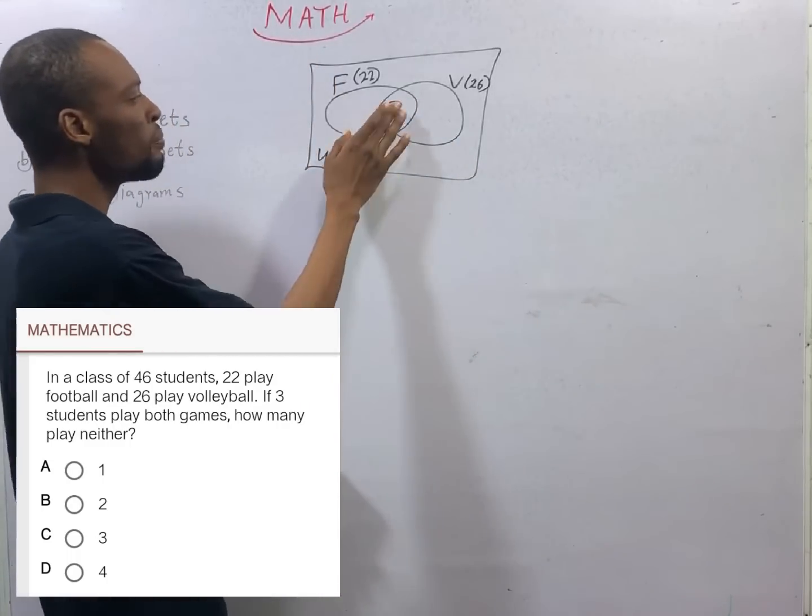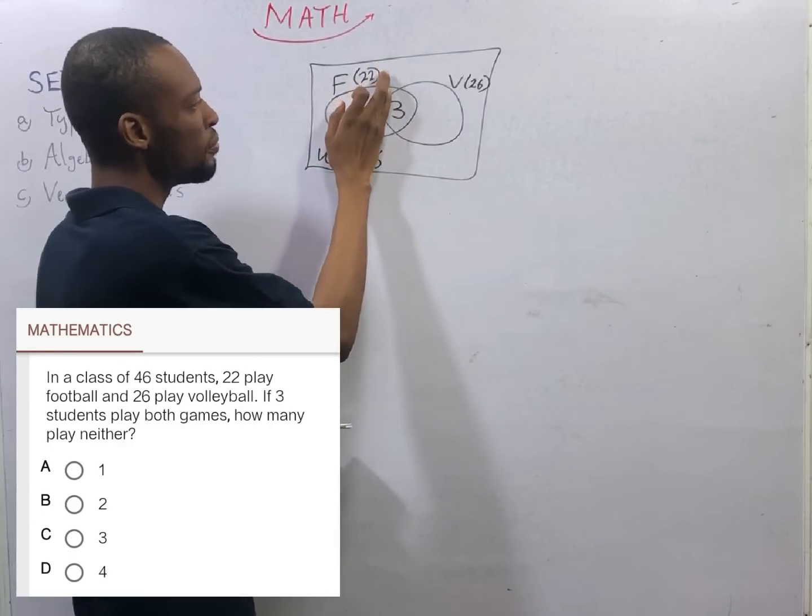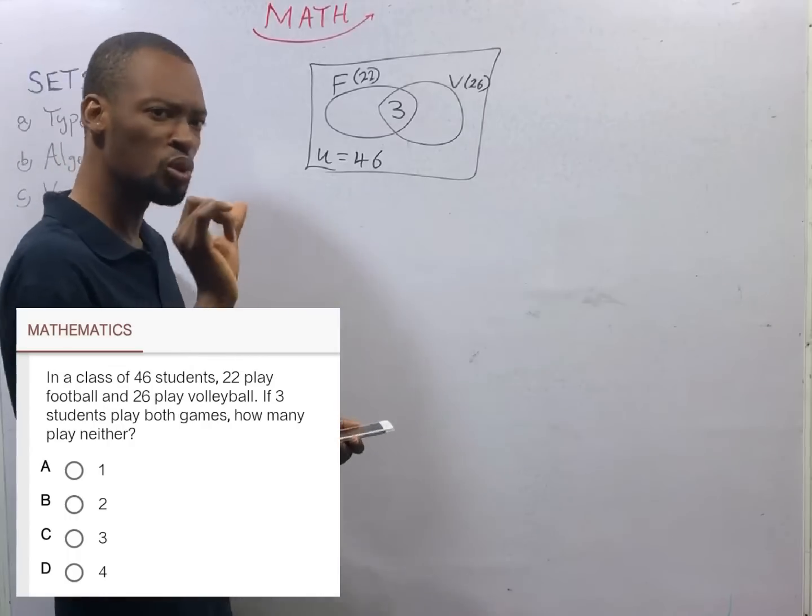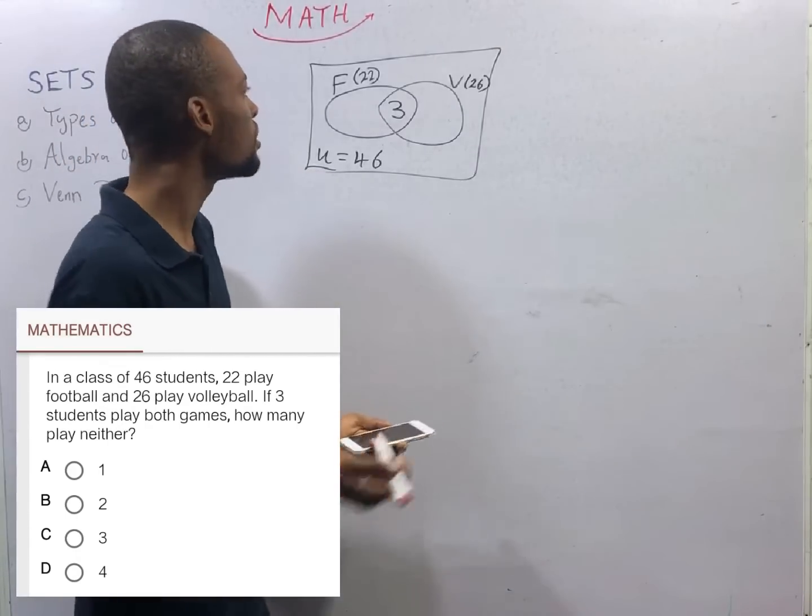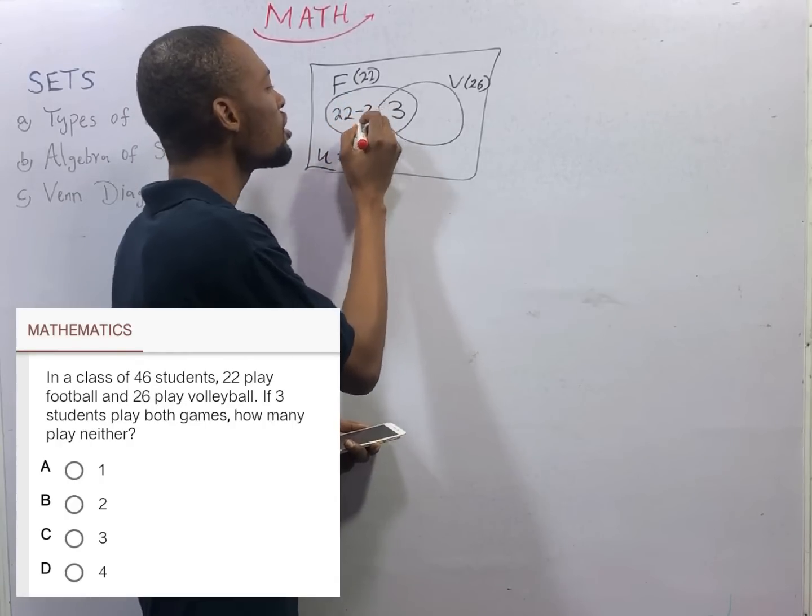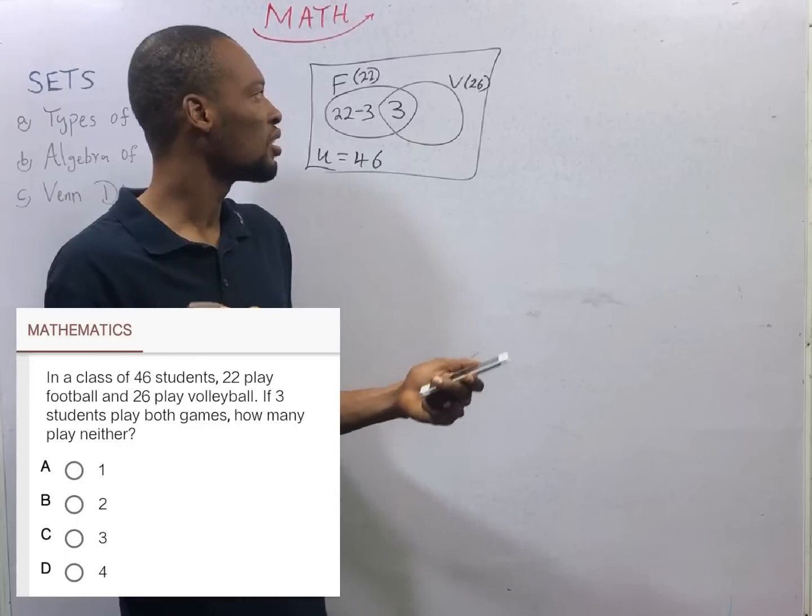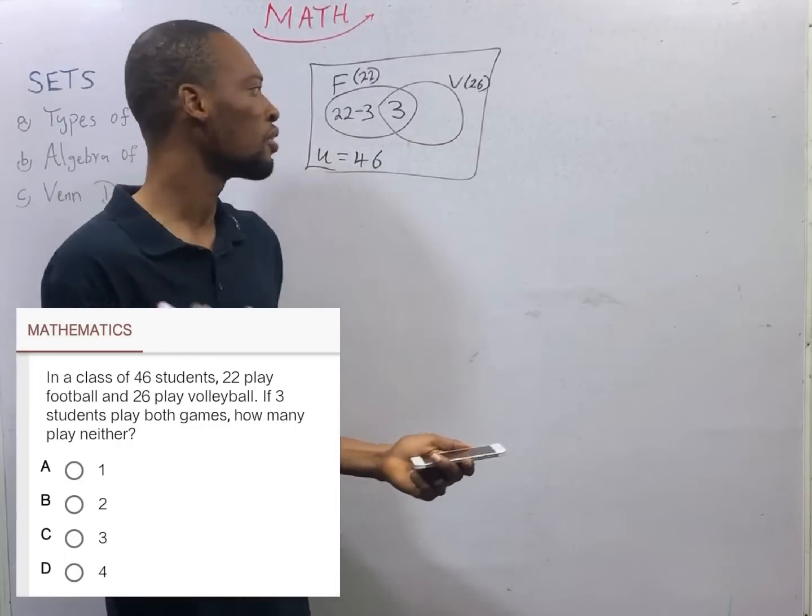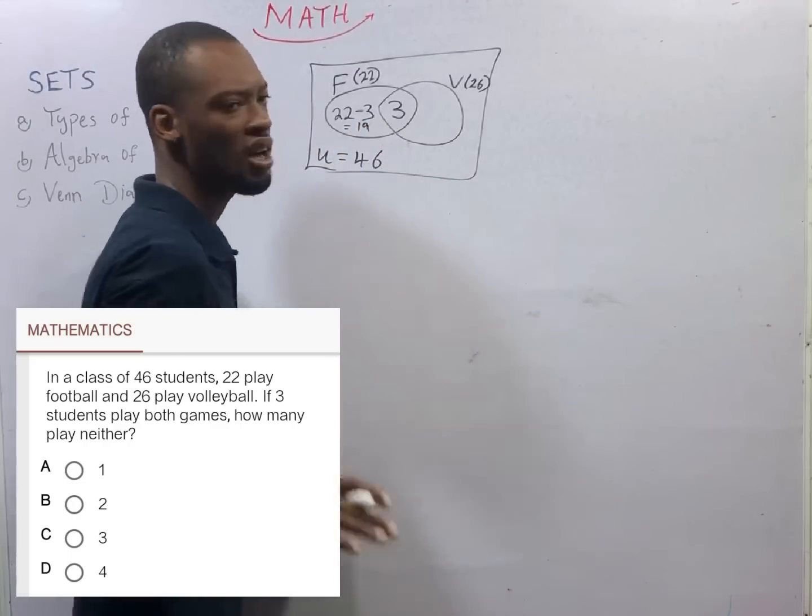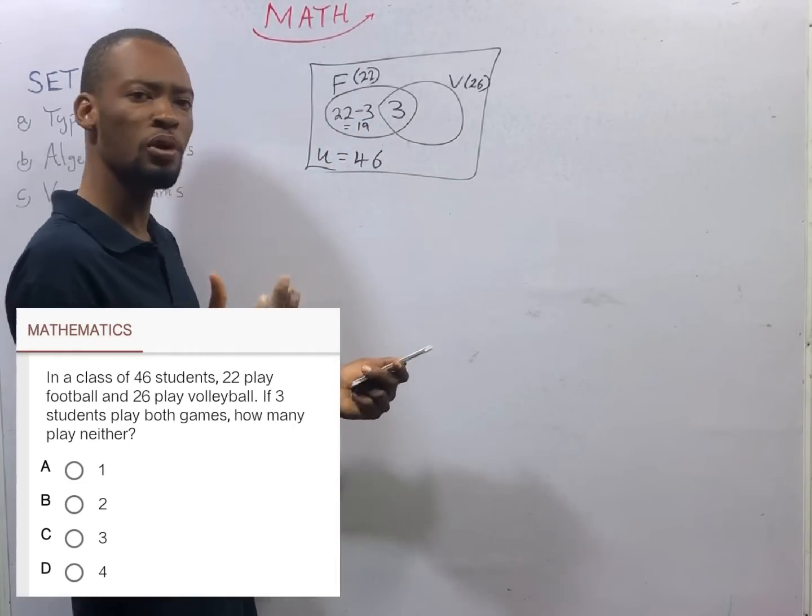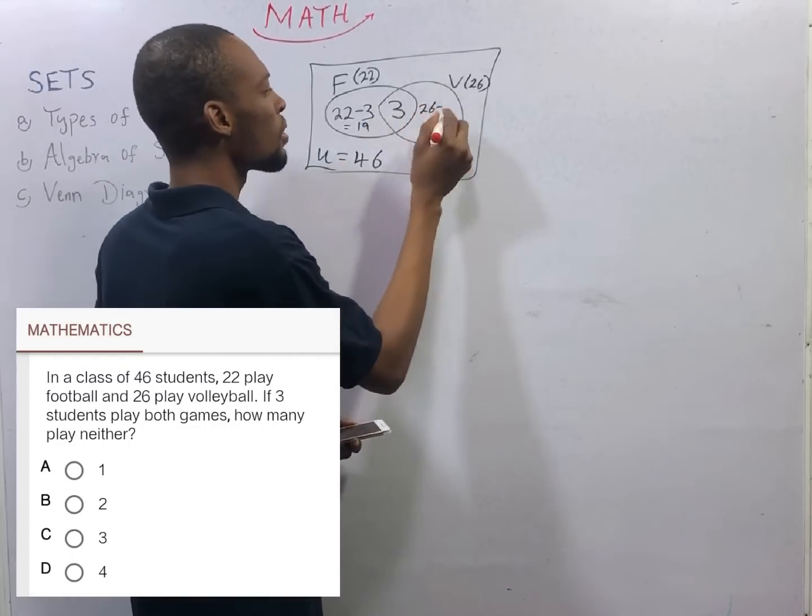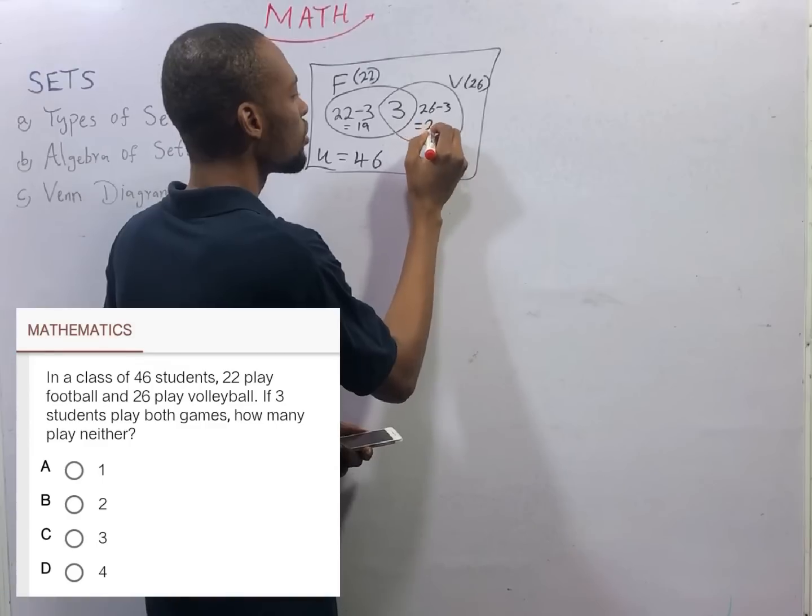If 3 play both games and 22 play football, while 26 play volleyball, those who play only football will simply be 22 minus 3, 3 being those who play both football and volleyball. So here is, that should be 19. And those who play volleyball only will be 26 minus those who play both, minus 3. That should give us 23.